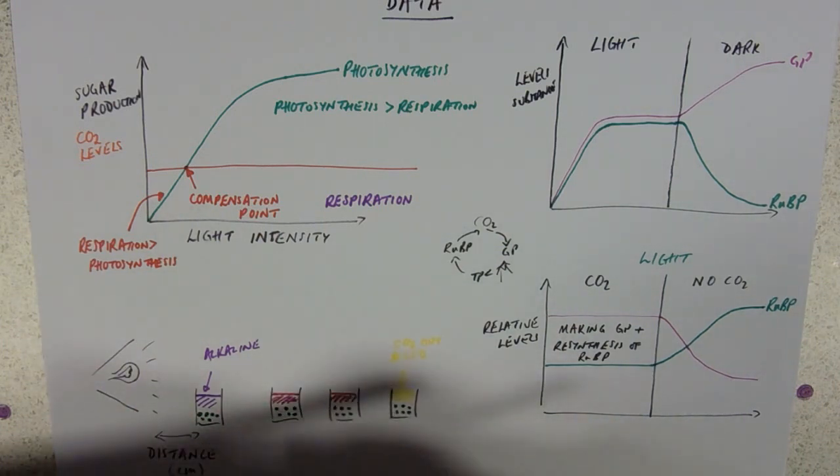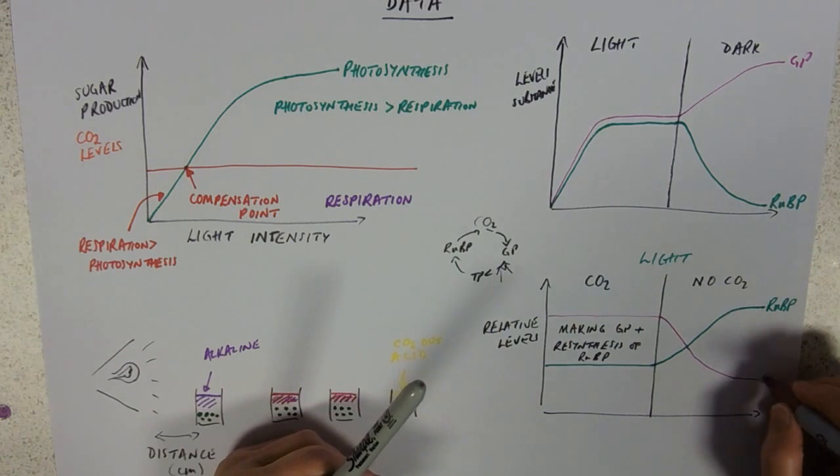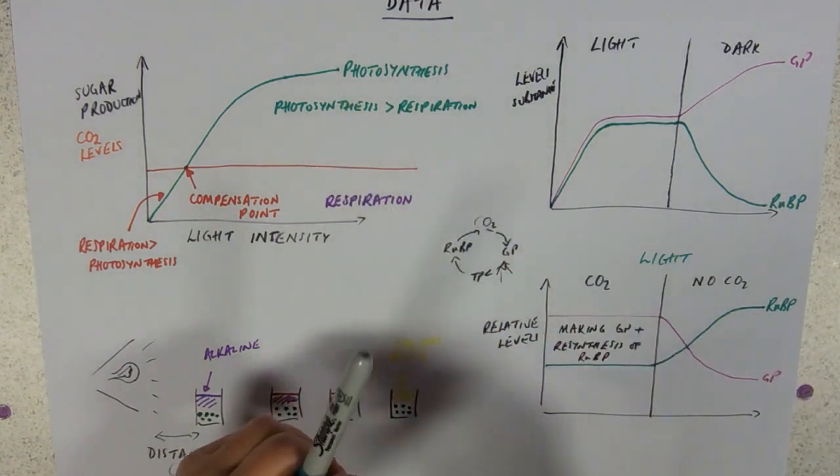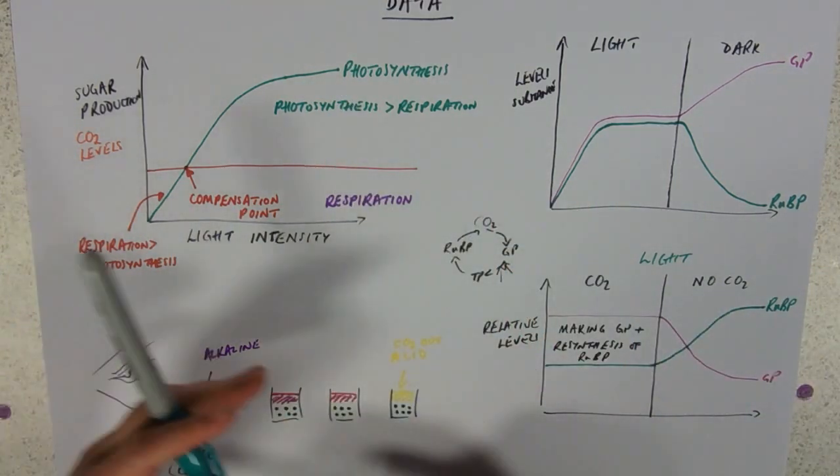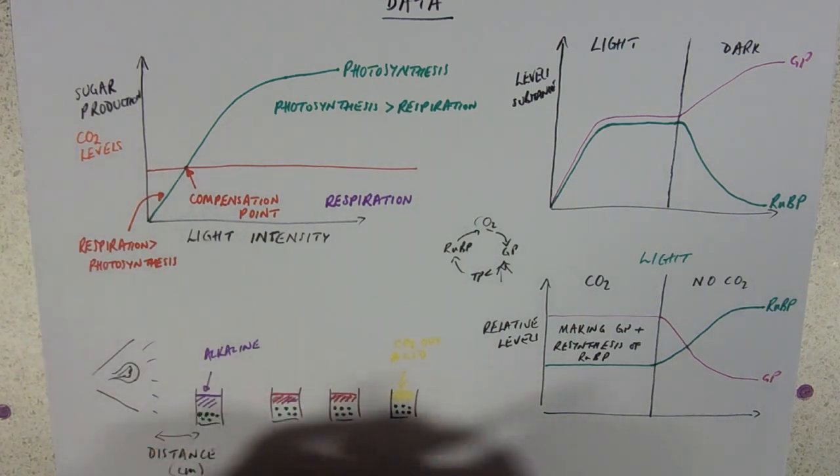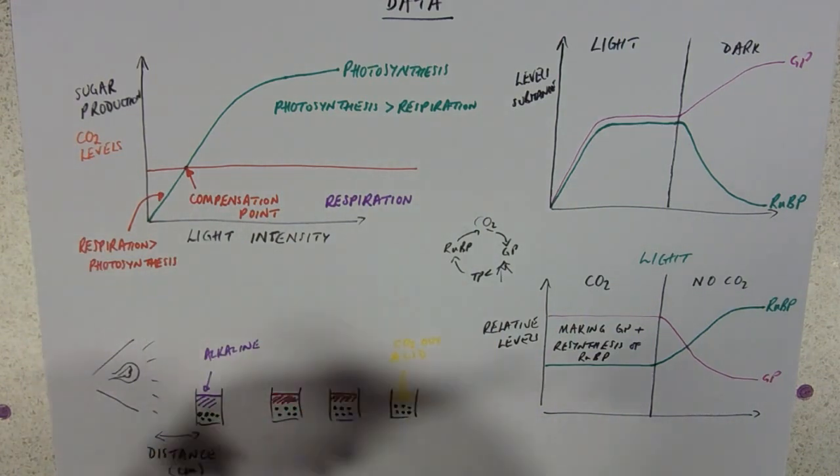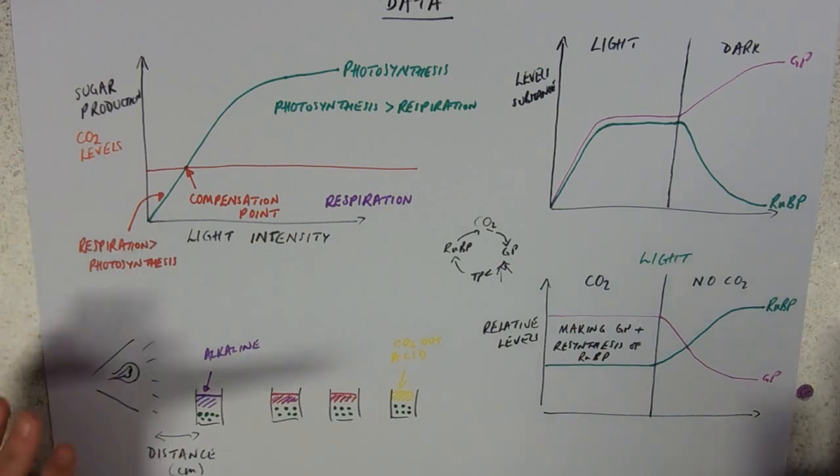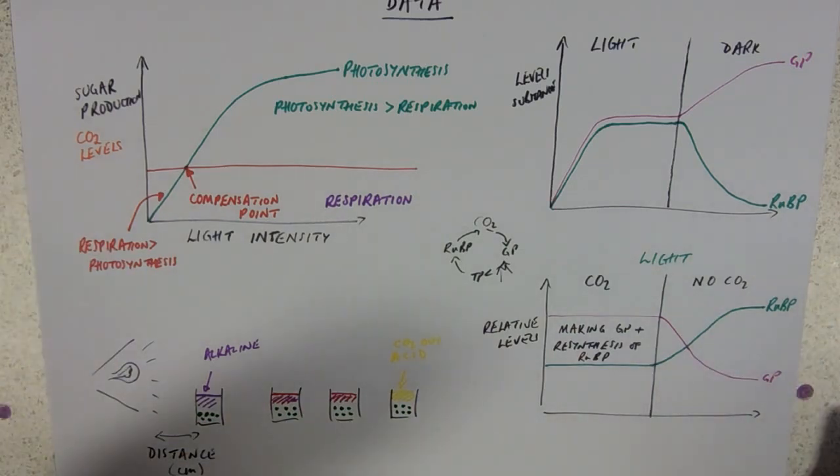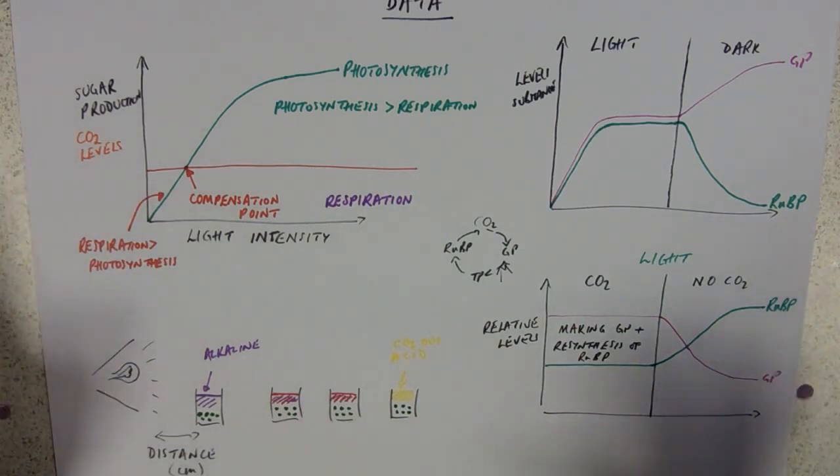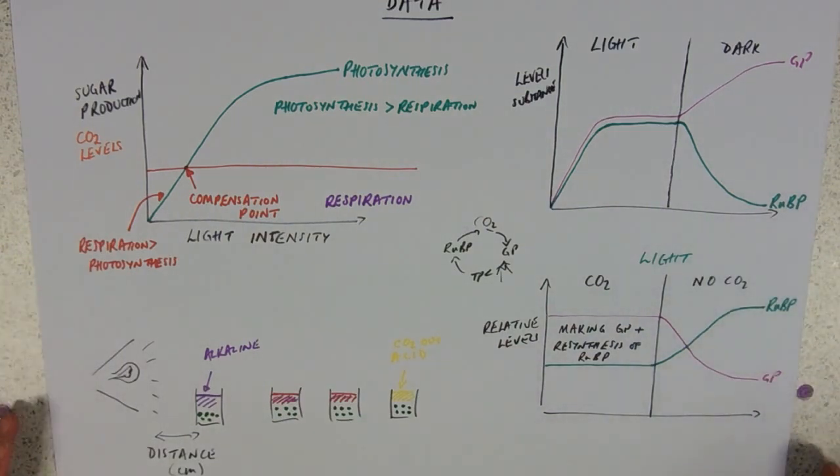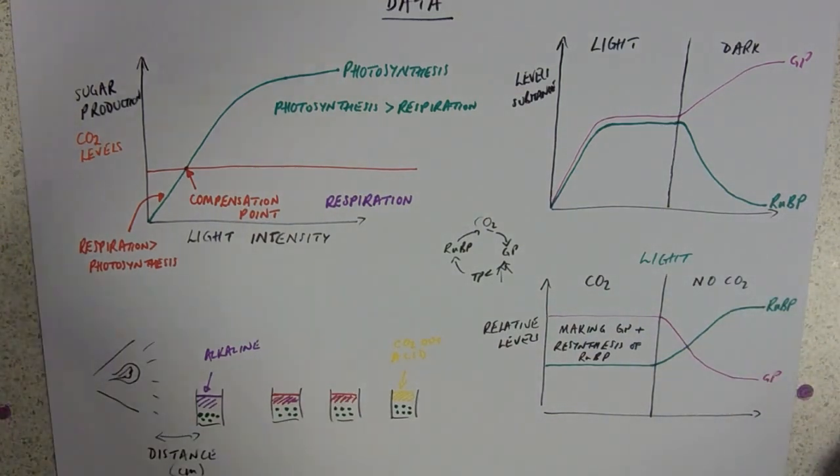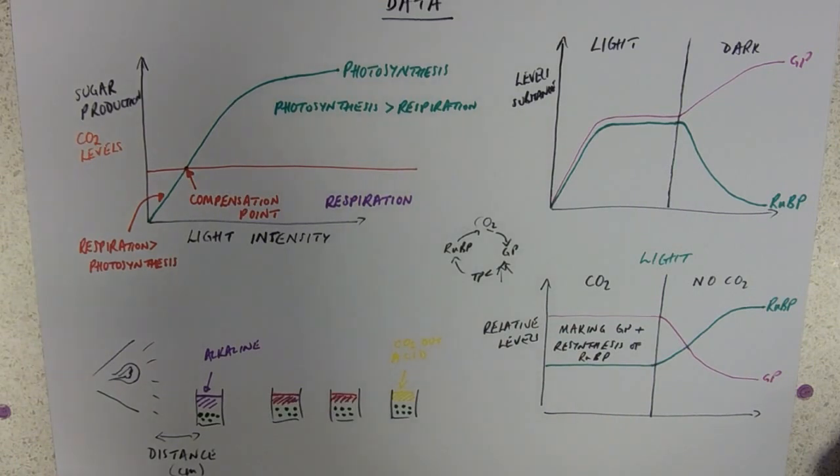So again, if you get one of these graphs, sketch a little Calvin cycle, okay, and then work out what's going on. We could do the same for, say, NADPH, with the light on, with the light off. You could do that kind of graph as well for the light reactions. Okay, I think that's your lot on data.